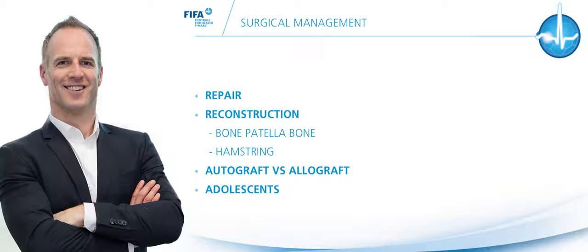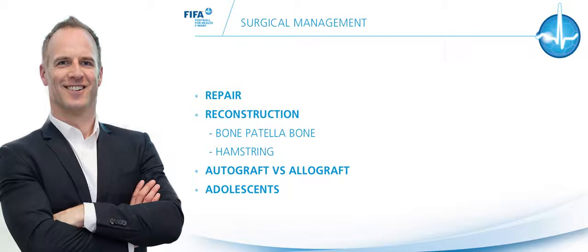An interesting situation is how to manage the increasing number of adolescents who sustain an injury to their anterior cruciate ligament. These athletes typically have poor compliance and are very likely to return to football and to have recurring instability. There has been some concern about the possibility of damage to the open physis during surgery, but most now accept the risk of this as low and manage these patients with a trans-physeal hamstring graft reconstruction, to try and protect the knee from further damage due to recurring instability.